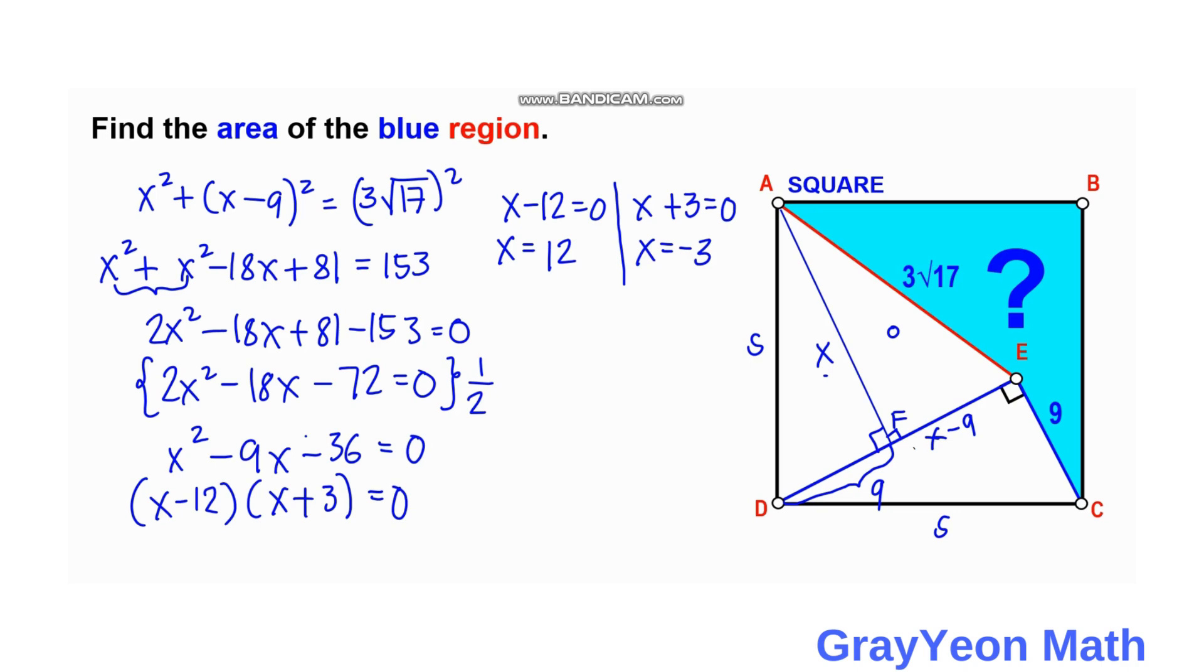So this is only, this will only be our answer, this 12, because this will give a positive distance for segment AF. This is only the valid answer, and this is invalid, the negative 3. So we will only get this X.